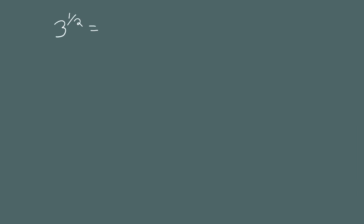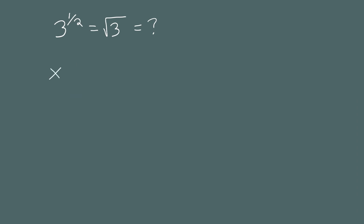Let's compute 3 to the 1 half power — the square root of 3 — manually, to build a deeper understanding. This is some number that, when squared, gives 3. Let's take a guess: if you square 1, you get 1, which is less than 3. If you square 2, you get 4, which is bigger than 3. So the square root of 3 must be bigger than 1 and less than 2. Let's try to narrow it down further.